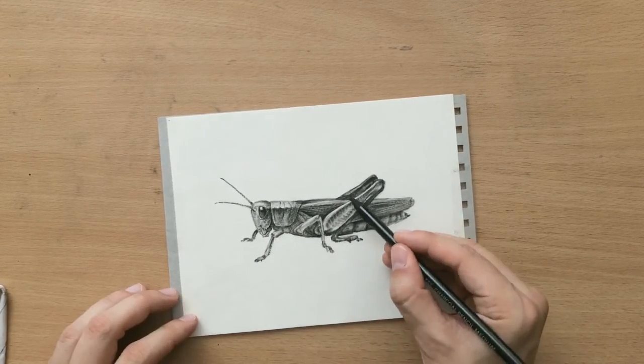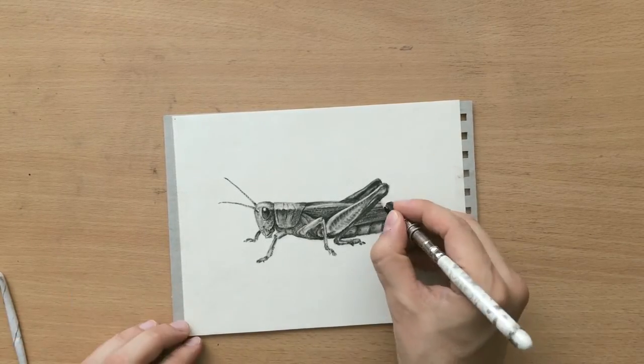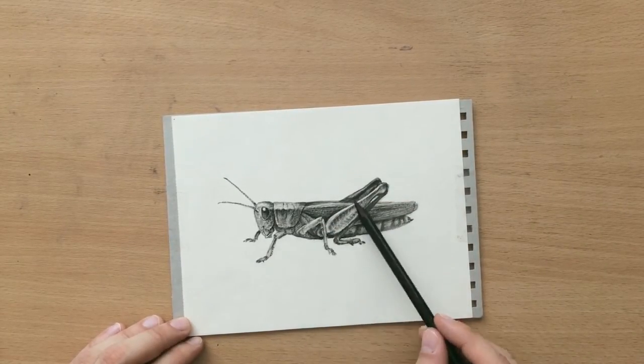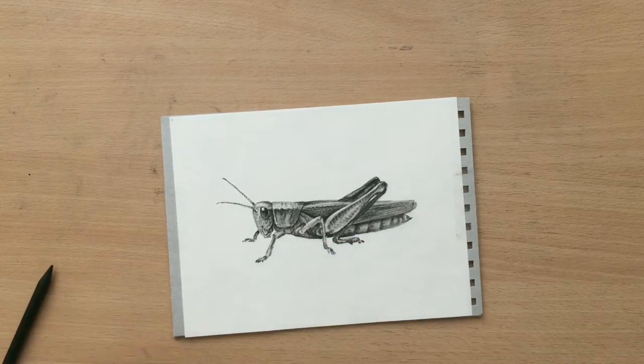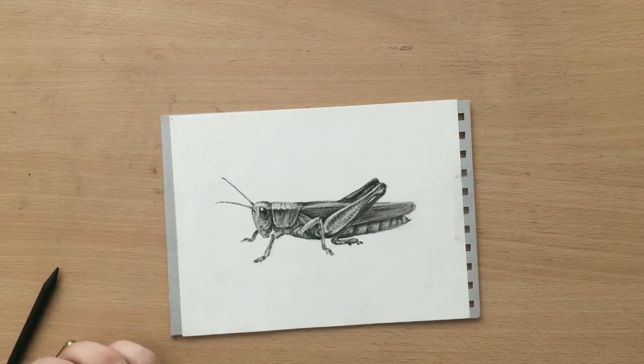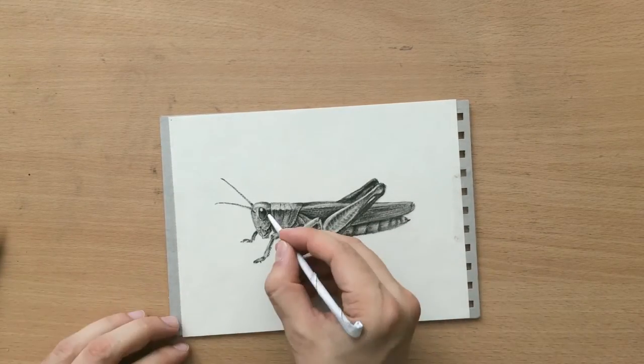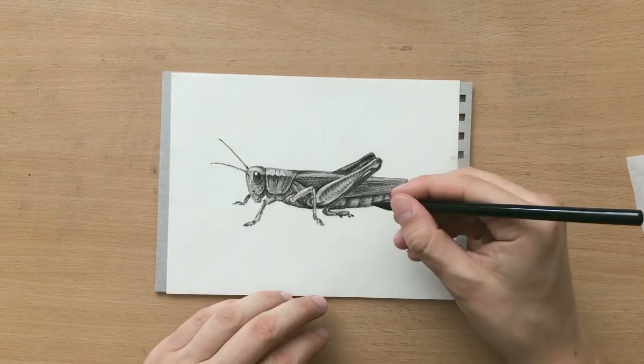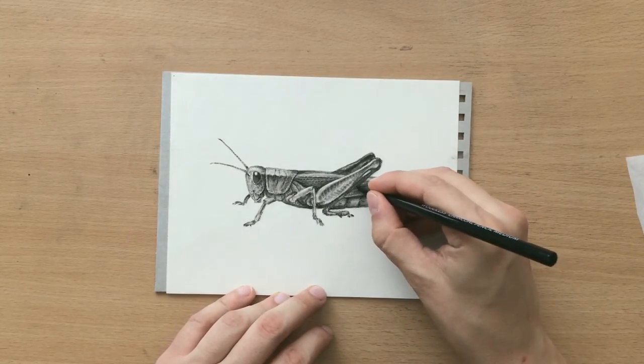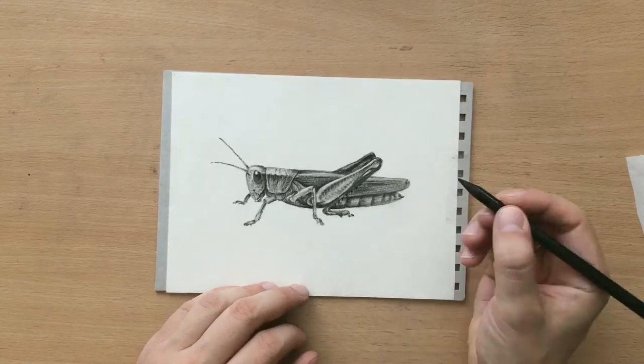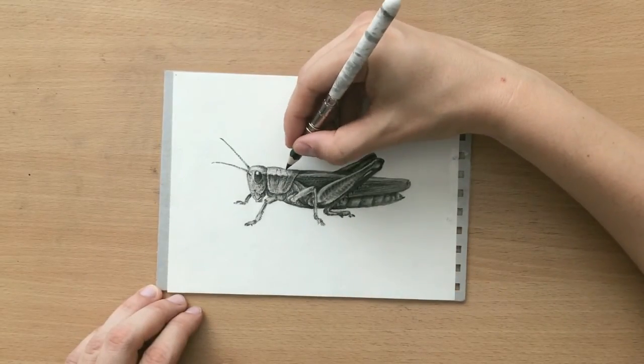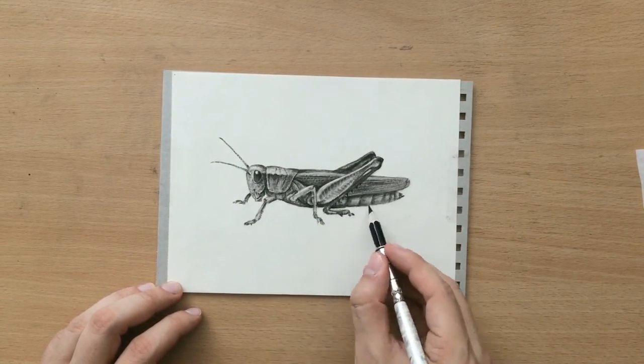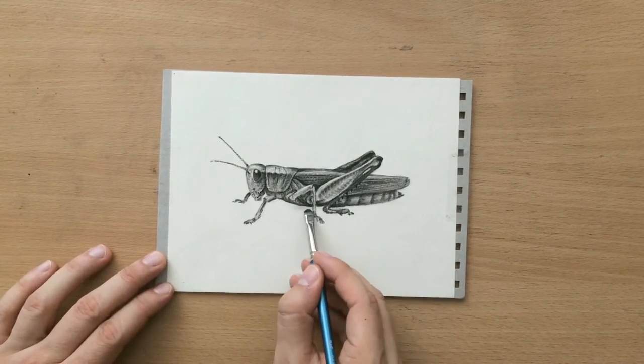It's mostly done but I'm just refining the contrast and texture in certain areas and adding a few details here and there. Just a few details on the legs. These thorn-like shapes on the hind legs are used for making those famous noises that grasshoppers make by rubbing their legs against the wings.